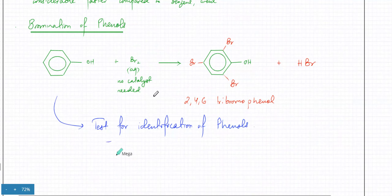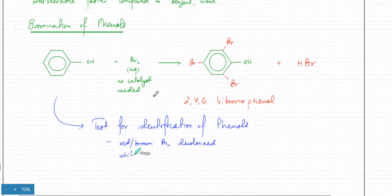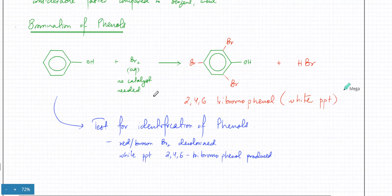This reaction is also used as a test for identification of phenols. The observations are: first, the red-brown bromine gets decolorized — but that also happens with alkenes, so that alone is not sufficient. The additional observation is that a white precipitate of 2,4,6-tribromophenol is produced.